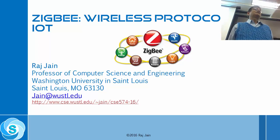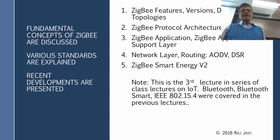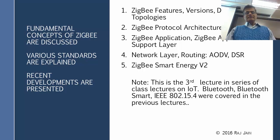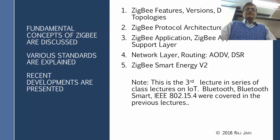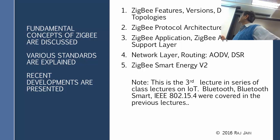Zigbee is very common nowadays. We have been talking about it for a long time but now it is here. Zigbee is contending to be one of the IoT protocols, although the result is still to be seen. We will talk about Zigbee: what are the features, what are the different versions, what is the protocol architecture, and then we will get into some math — AODB and DSR routing.